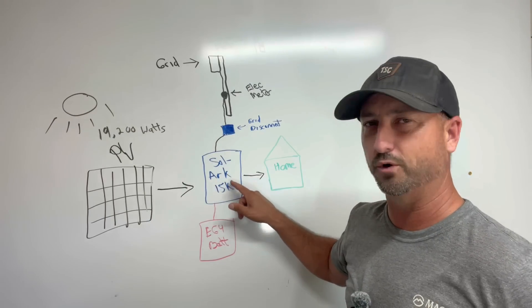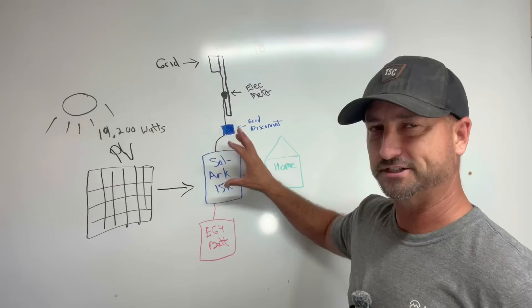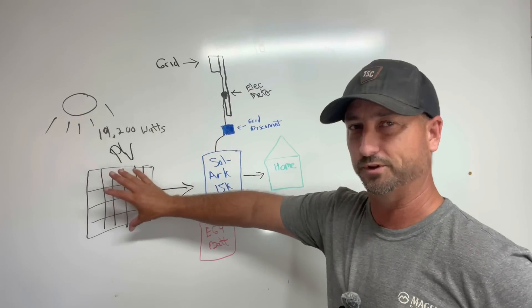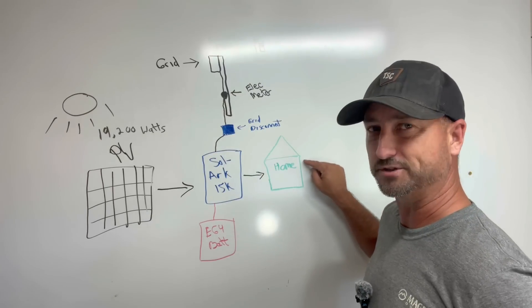From the solar panels it goes to my Solark 15k all-in-one hybrid inverter. From there it gets distributed. That power gets converted from DC, which is what the power that the solar panels bring in, to AC and then sends it to my house.